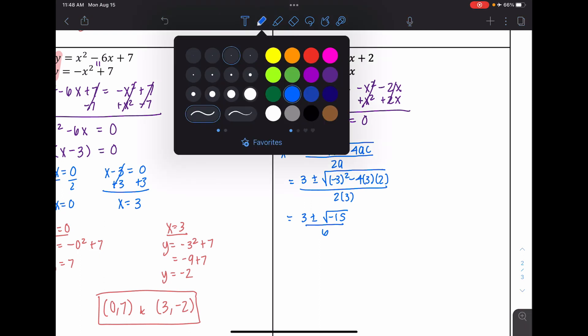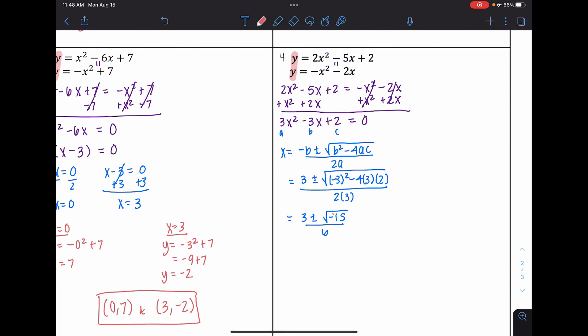And here, to find solutions to systems, we're only looking for real solutions. Because if you were to graph this, it wouldn't intersect. So here, this is going to be no real solution because of that negative number. If I were to graph both of these quadratic functions, I would see they never intersect.